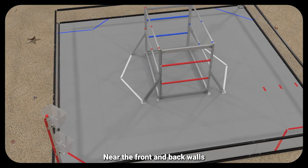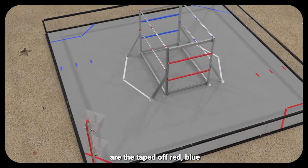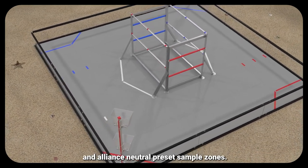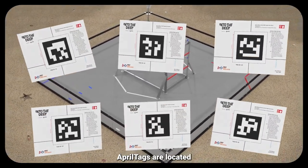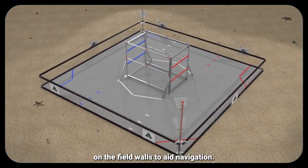Near the front and back walls are the taped-off red, blue, and alliance-neutral preset sample zones. April tags are located on the field walls to aid navigation. Blue and red alliance areas are on the left and right sides of the field.